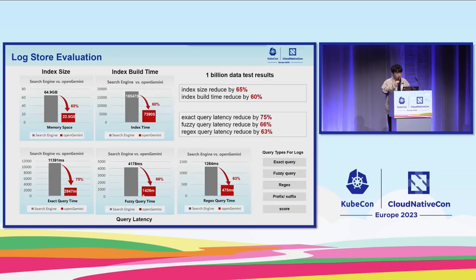For the log store evaluation, we compared with a search engine on a 1 billion record dataset. The index size was reduced by 65%, and index build time was reduced by 16%. For query performance, exact query latency was reduced by 75%, and fuzzy query latency was also reduced by 16%. These improvements are due to the CLV index and our query engine.